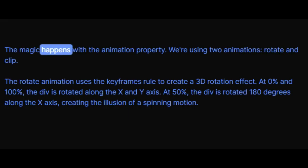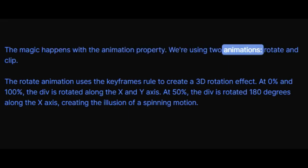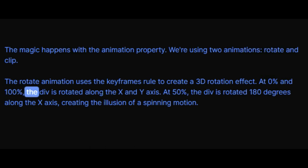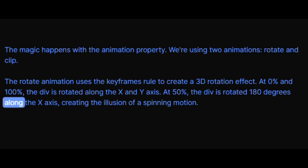The magic happens with the animation property. We're using two animations: rotate and clip. The rotate animation uses the keyframes rule to create a 3D rotation effect. At 0% and 100%, the div is rotated along the X and Y axis. At 50%, the div is rotated 180 degrees along the X axis, creating the illusion of a spinning motion.